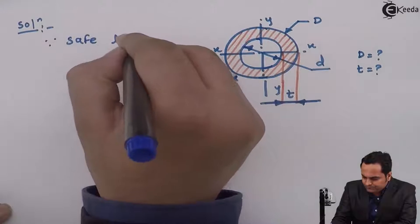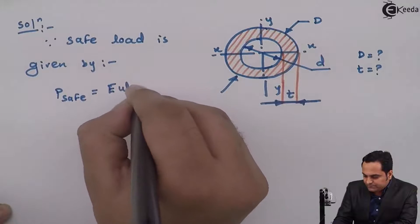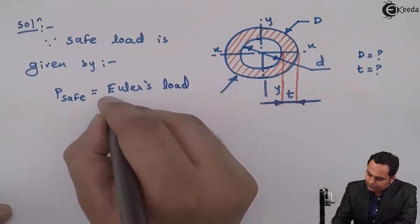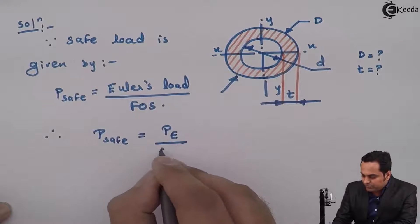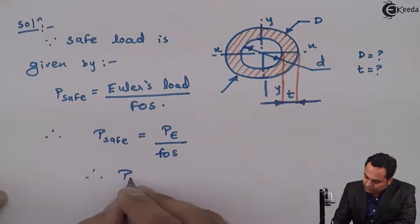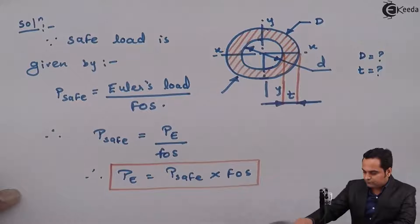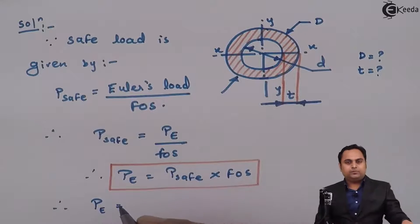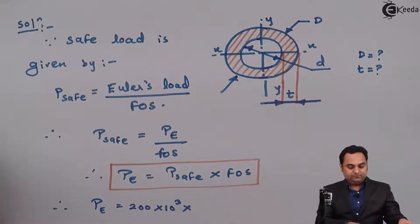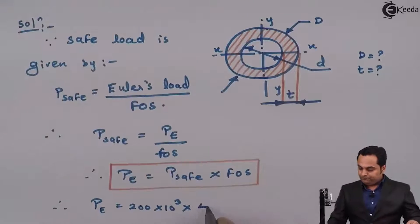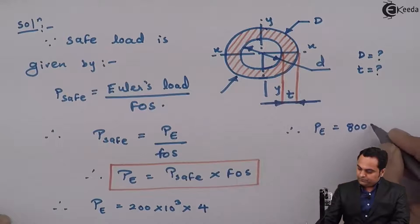Since safe load is given by P_safe = Euler's load divided by factor of safety, therefore P_E = P_safe × FOS. P_safe is 200×10³ Newton and FOS is 4, so Euler's load comes out to be 800×10³ Newton.